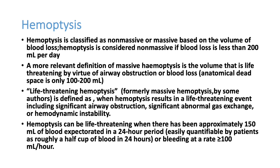If the bleeding rate is more than 100 to 200 ml, it can block all the airways in the lungs and suddenly produce airway obstruction. Therefore, 150 ml of blood expected in 24 hours can be classified as life-threatening hemoptysis. One bout of hemoptysis causing acute airway obstruction — whether 50 ml or 100 ml — is life-threatening. Hemoptysis is now classified as life-threatening or non-life-threatening.